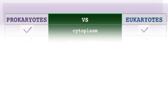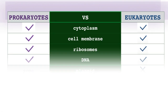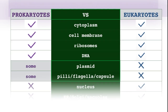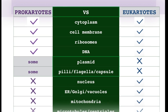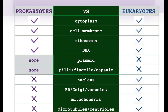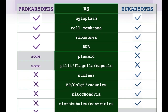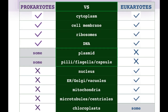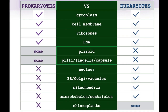To summarize: both cell types have cytoplasm, cell membrane, ribosomes, and DNA. Some prokaryotic cells also have plasmids, pili, flagella, and a capsule. The DNA of the eukaryotic cell is surrounded by a membrane creating a nucleus, which is the main difference between a prokaryotic and a eukaryotic cell. Only the eukaryotic cells have endoplasmic reticula, Golgi apparatus, mitochondria, microtubules, and centrioles. And only some eukaryotes have chloroplasts.